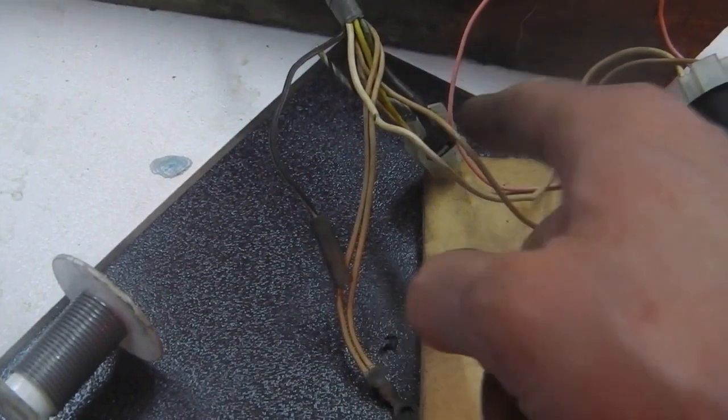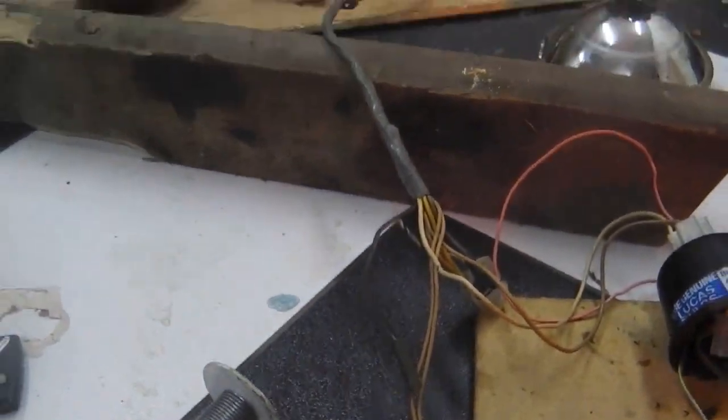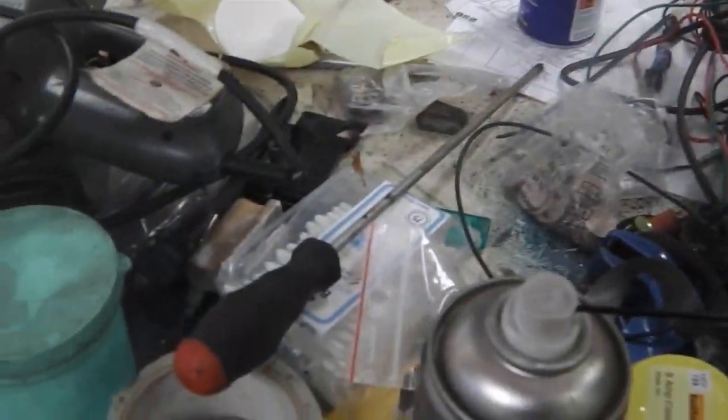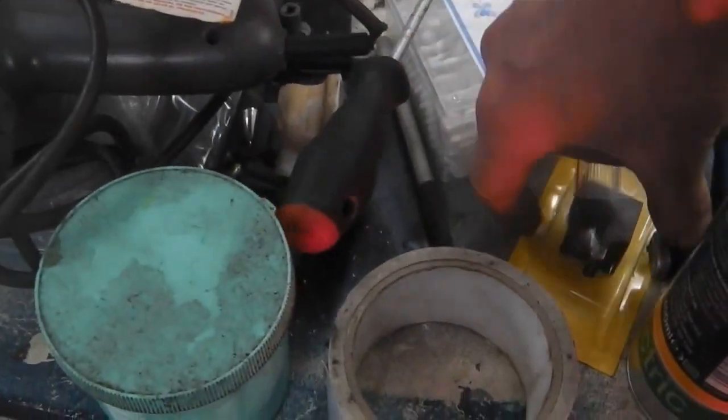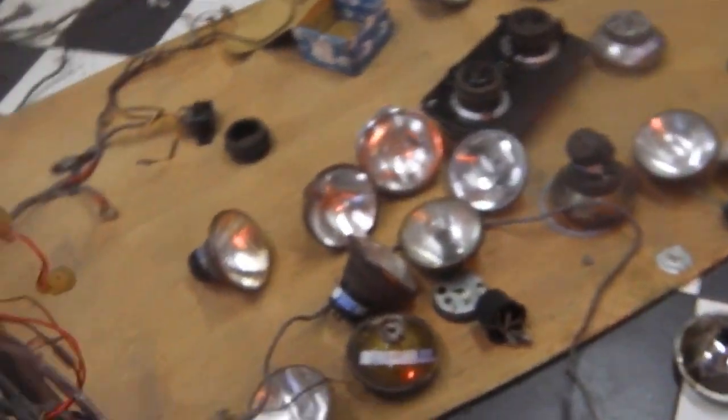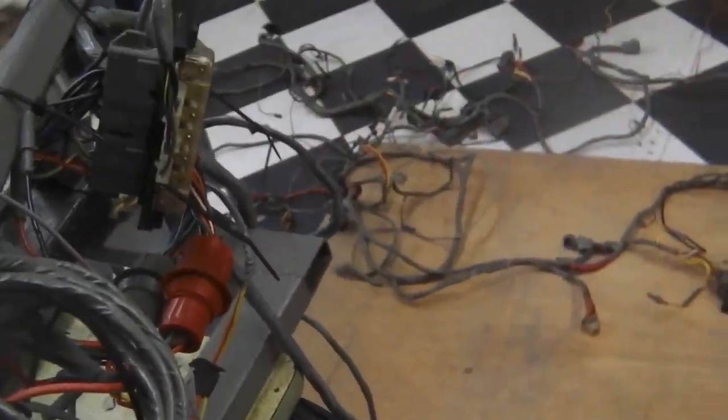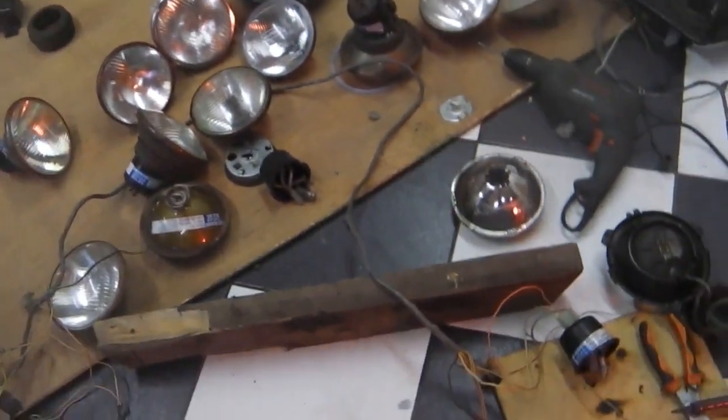Next job, build another one of those and then start to connect the cables in the right way and get the relay fitted. The relay should be up here somewhere. There it is. Then we're going to find a suitable power feed in the loom.